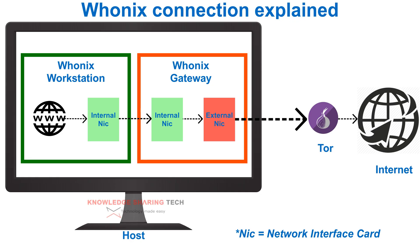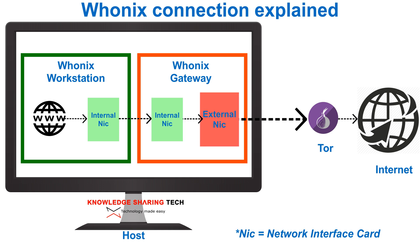Before we start, let me give you a very quick overview in less than a minute on how HUNIX works, so you have a grasp on all the components in this video. HUNIX workstation has one NIC connected to an internal network, and HUNIX gateway has two NICs - one connected to the internal network and one connected to the internet via Tor.